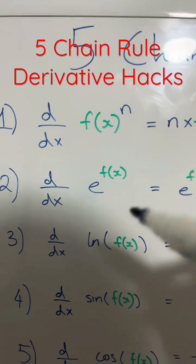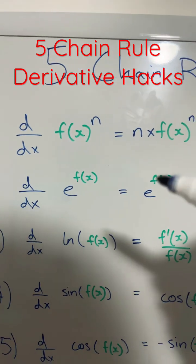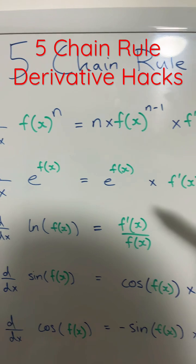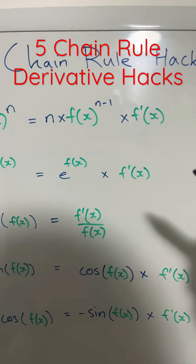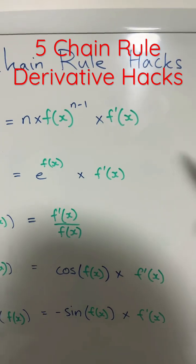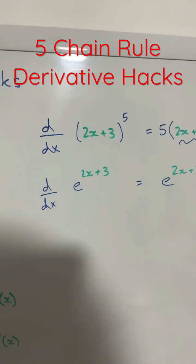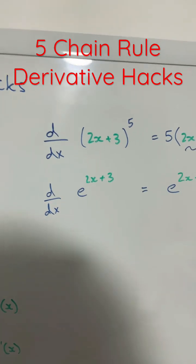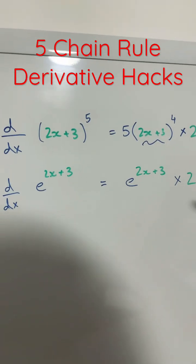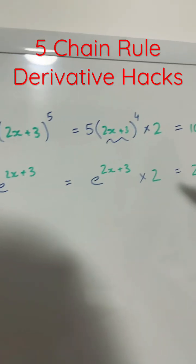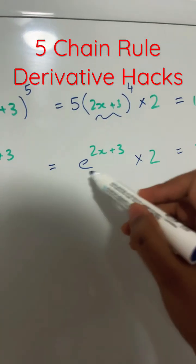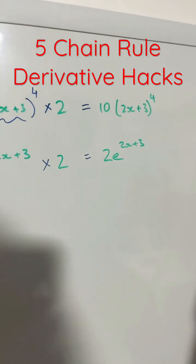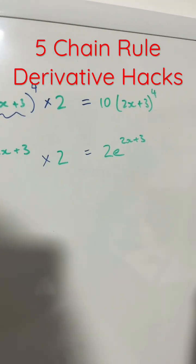When deriving e to the power of f of x, the derivative is just e to the power of f of x times the derivative of f of x. For example, deriving e to the power of 2x plus 3 becomes e to the power of 2x plus 3 times the derivative of that, which is 2 — giving you 2e to the power of 2x plus 3.